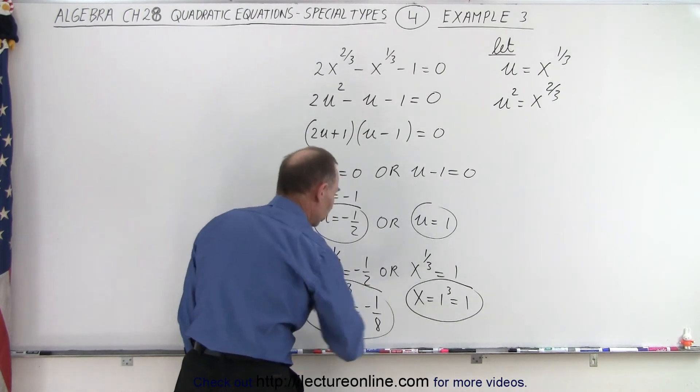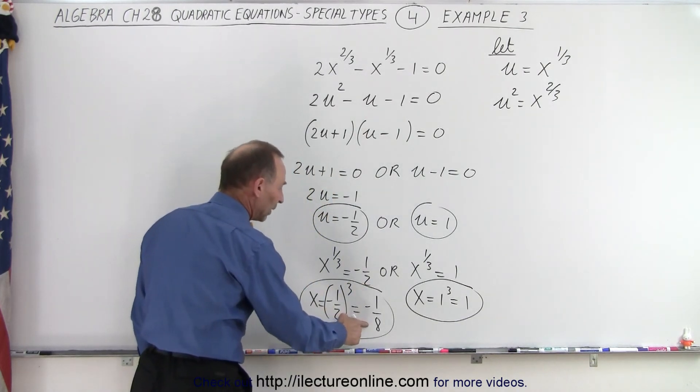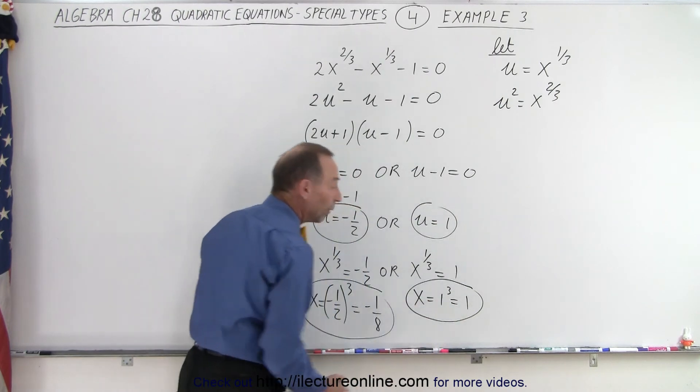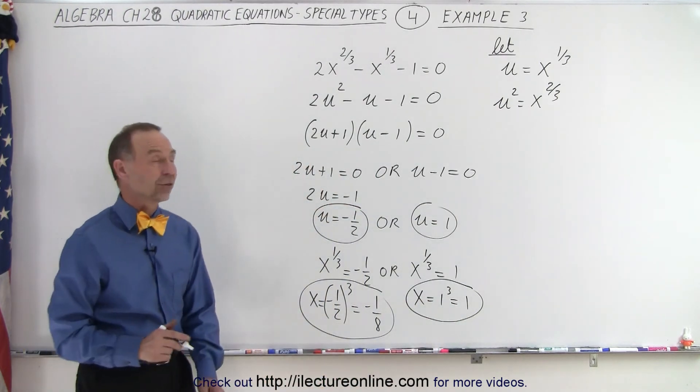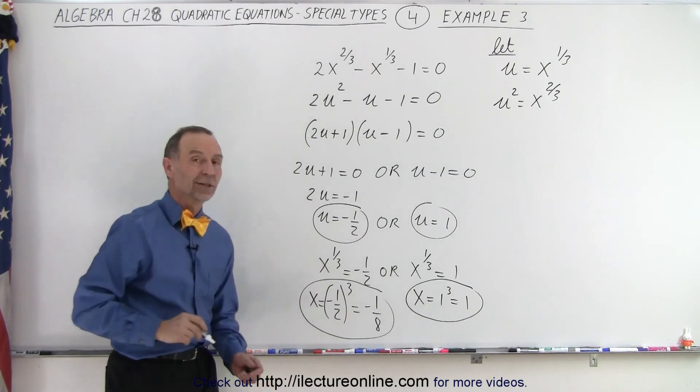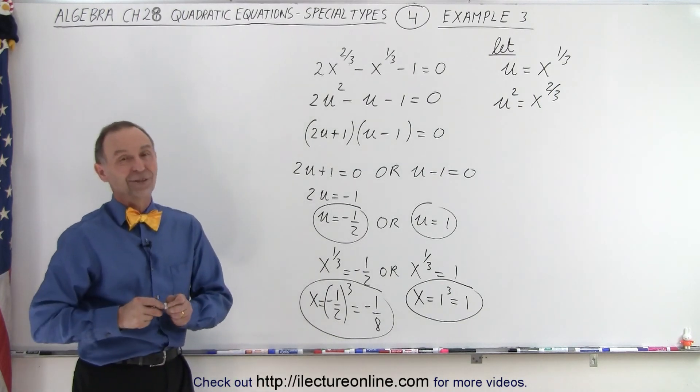So the two possible solutions are x equals negative 1 over 8, or x equals positive 1. They're both valid solutions, so those are the answer to our original equation. And that is how it's done.